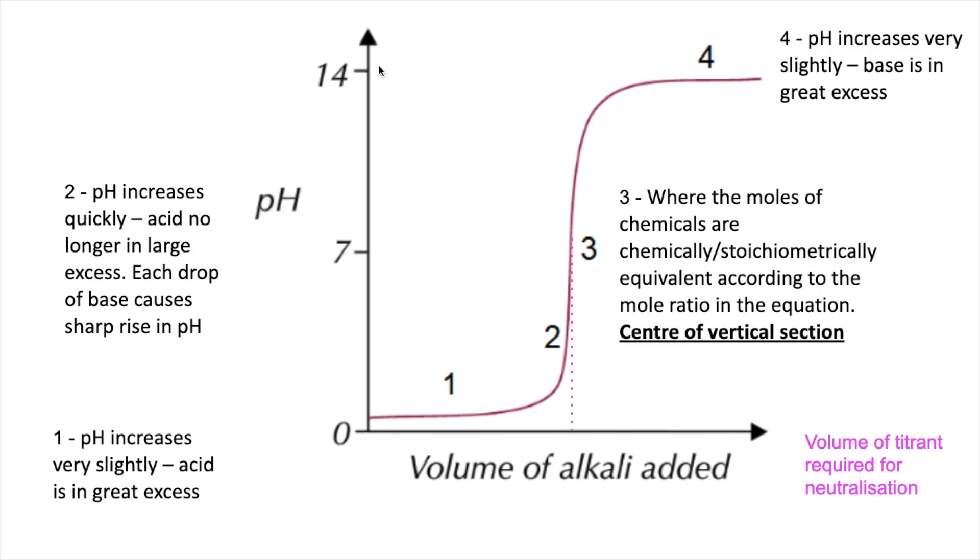If you were doing the titration the other way around, so your acid was in the burette and your alkali was in the conical flask, your curve would just mirror this one.